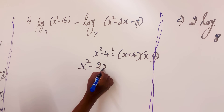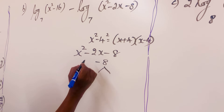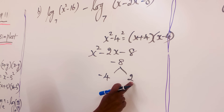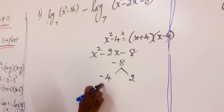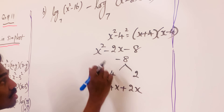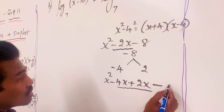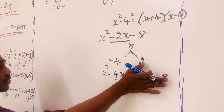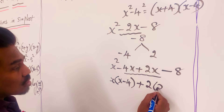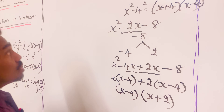We need to factorize x squared minus 2x minus 8. To factor negative 8: we need two numbers whose product is negative 8 and sum is negative 2. That gives negative 4 and positive 2. So negative 2x is written as negative 4x plus 2x, giving x squared minus 4x plus 2x minus 8. Taking x outside the first two terms gives x(x minus 4), and taking 2 outside the last two terms gives 2(x minus 4). The common factor (x minus 4) gives us (x minus 4)(x plus 2).